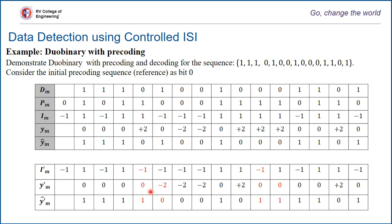The detection rule for duobinary with precoder is: if magnitude of ym is greater than 0, decode it as 0; otherwise decode it as 1. So for all plus 2 and minus 2, it's 0, and for all 0's it's 1. Applying the detection rule, the bit sequence has an error in 2 bits and another error in 2 bits. It is very obvious that 1 bit error has resulted in only 2 bit errors — the error has not propagated far, unlike duobinary without precoding. Here it is limited to a maximum of 2 bits.